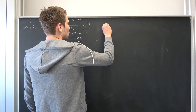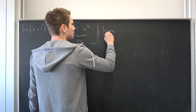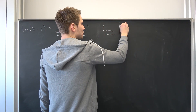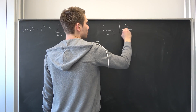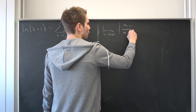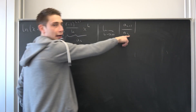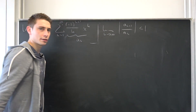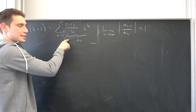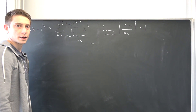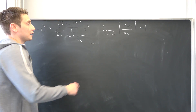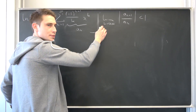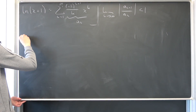We are going to have the limit as k approaches infinity of the absolute value of a_{k+1} over a_k, and if this thing is strictly less than 1, then that series converges absolutely. I'm going to refer to this limit as just capital L.